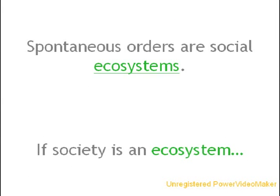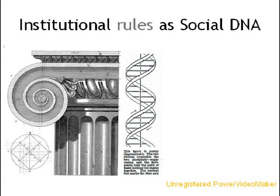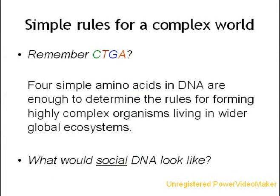The term spontaneous order is pretty abstract, so another way we might describe spontaneous order is as a social ecosystem. If society is a kind of ecosystem, what are institutions? Institutional rules are social DNA. What do DNA and institutions have in common? Basically, they are simple rules for a complex world. Remember CTGA from biology class — cytosine, thymine, guanine, and adenine? These are the four amino acids that make up DNA. While a strand of DNA might get pretty complicated, and the life forms they express even more complex, they are still all combinations of C, T, G, and A. Four simple amino acids in DNA are enough to determine the rules for forming highly complex organisms living in wider global ecosystems.